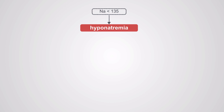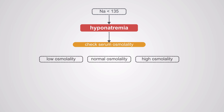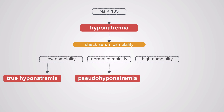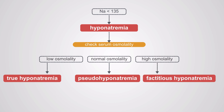Once you have a sodium less than 135 and a diagnosis of hyponatremia, you want to check the serum osmolality. If that serum osmolality is low, you have true hyponatremia. If it's normal, you have pseudo-hyponatremia — a lab error due to high fats or high proteins in the blood. And if you have a high osmolality, we have what we call factitious hyponatremia.